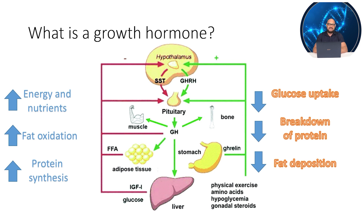It acts through specific cellular receptors, producing a stimulatory effect on tissues — predominantly bones, cartilage, and muscles. It retains nutrients such as amino acids and nitrogen inside the muscle cells, bones, and cartilage.